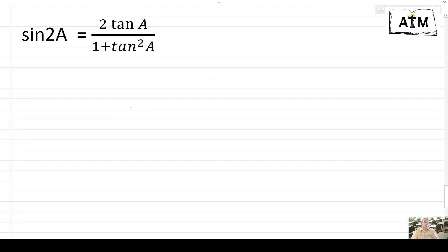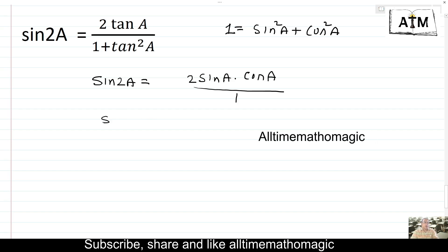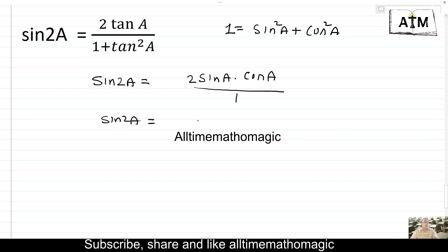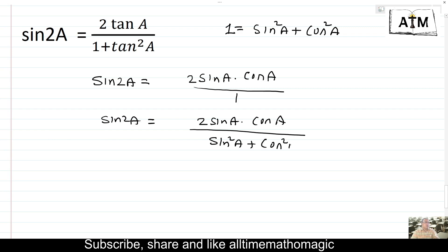First of all, let us develop sin 2a equals to 2 tan a upon 1 plus tan square a. For that, we know that sin 2a equals to 2 sin a cos a. Now we can write sin 2a equals to 2 sin a cos a upon 1. Now 1 equals to sin square a plus cos square a. Therefore, sin 2a equals to 2 sin a cos a upon sin square a plus cos square a.